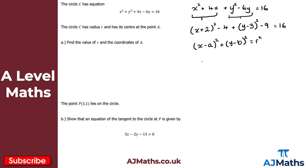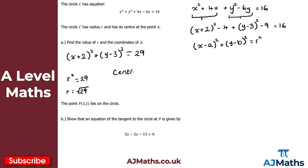This gives x plus 2 all squared plus y minus 3 all squared equals 16 plus 13, which is 29. So r squared equals 29, meaning r equals the square root of 29. For the coordinates of center A, inspecting the equation gives x-coordinate minus 2 and y-coordinate positive 3. That's part A done — we have the radius and the center.